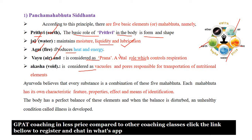According to Ayurveda, every substance is a combination of these five Mahabhutas, and our bodies are also made up of these five Mahabhutas. Each Mahabhuta has one characteristic feature. When the body has a perfect balance of these five elements, it remains healthy. Whenever the Panchabhutas are disturbed, unhealthy conditions or illness develop according to Ayurveda.